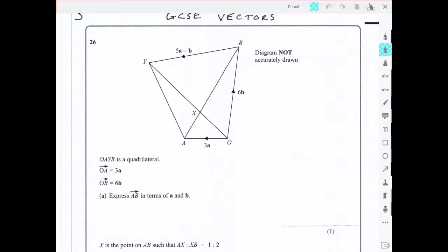Along which we know all the vectors on the way, so we can go from A to O and O to B. So I can write AB is equal to AO plus OB.